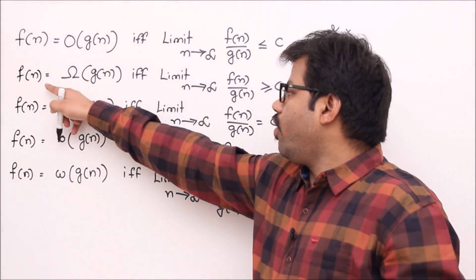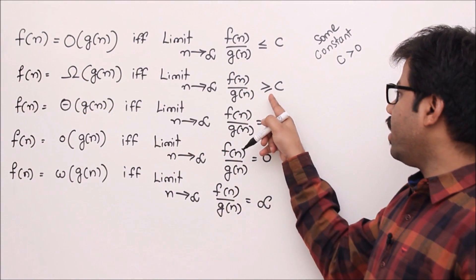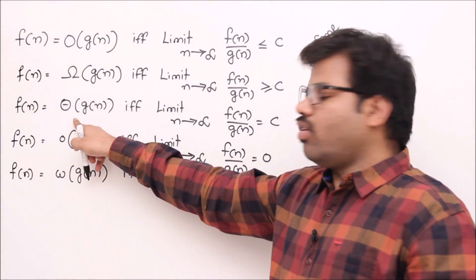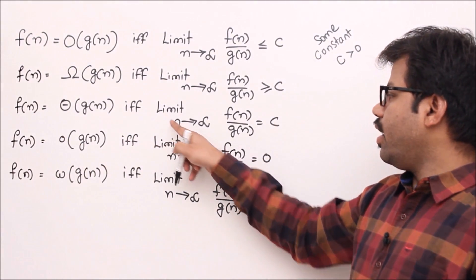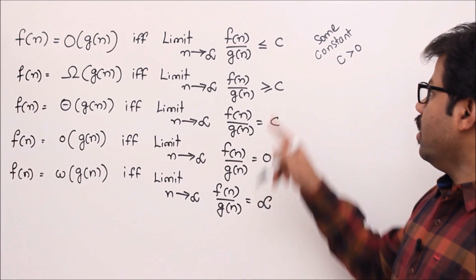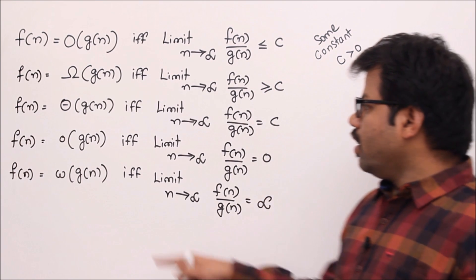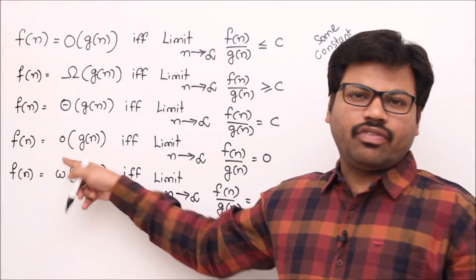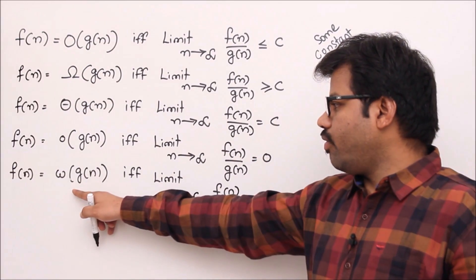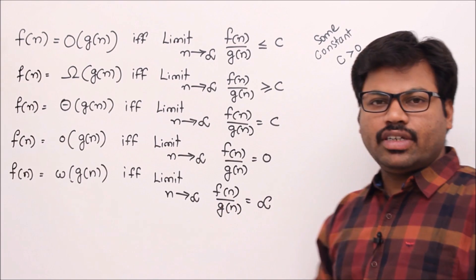Second: if f(n) is Ω(g(n)), then the ratio f(n)/g(n) is greater than or equal to some constant c > 0. If f(n) = Θ(g(n)), then the limit of f(n)/g(n) equals some constant. For small-o, the limit is 0, and for small-ω, the ratio is infinite.